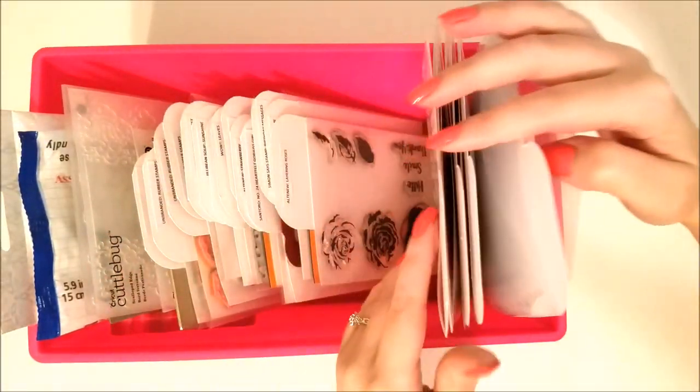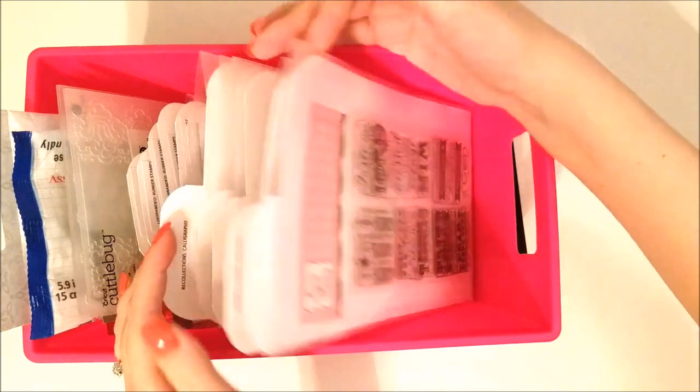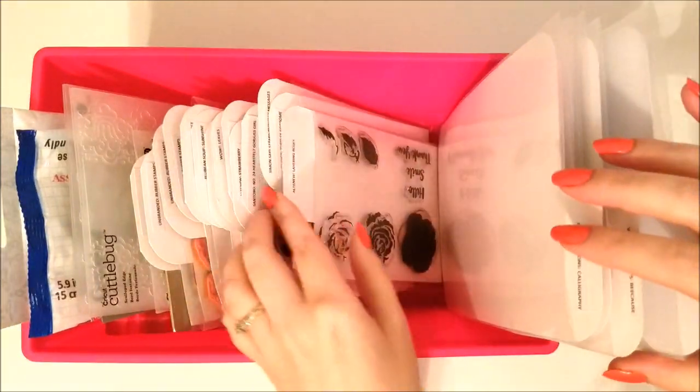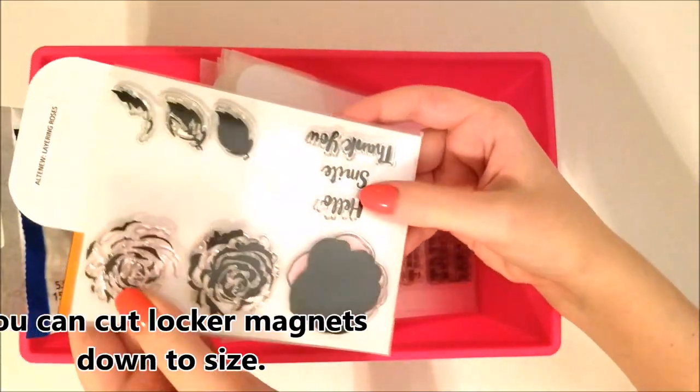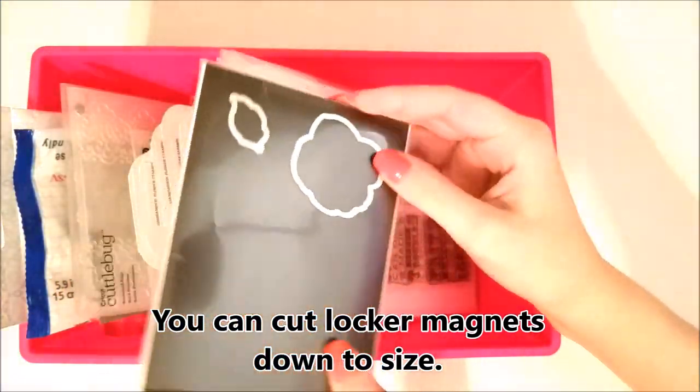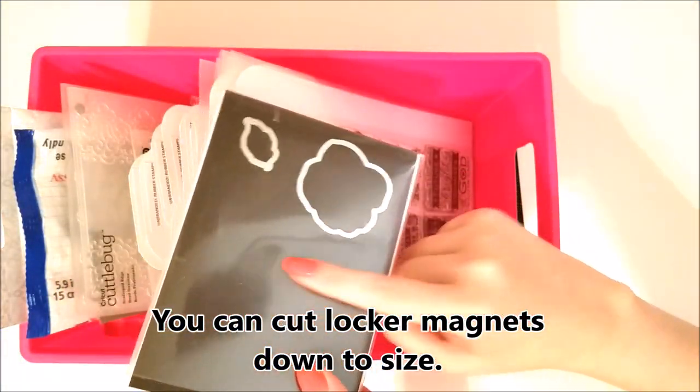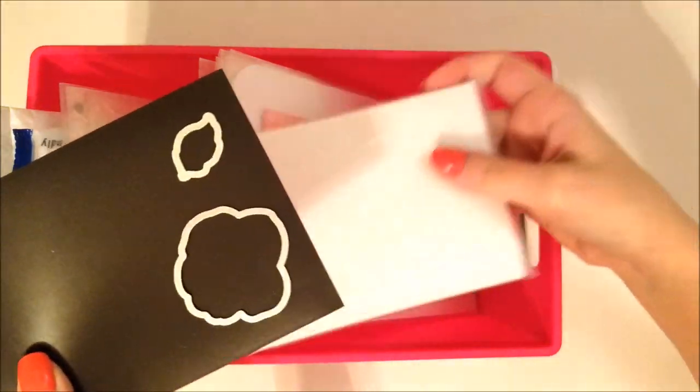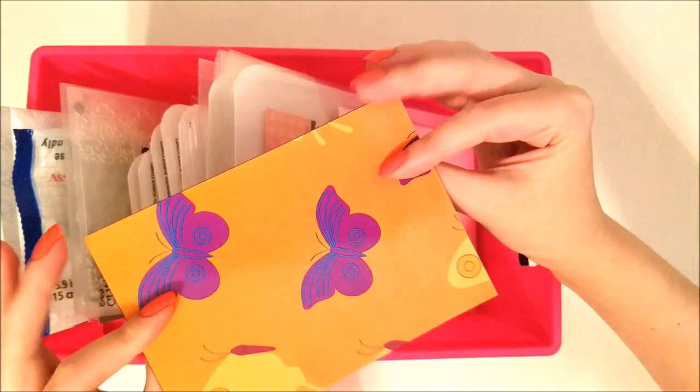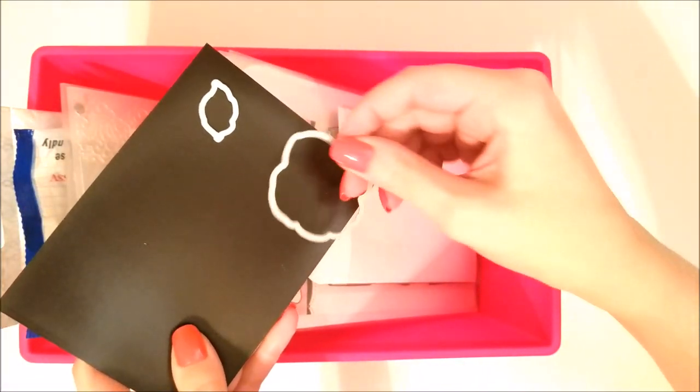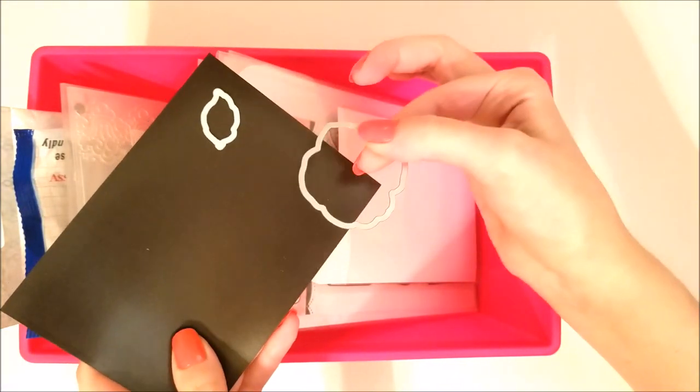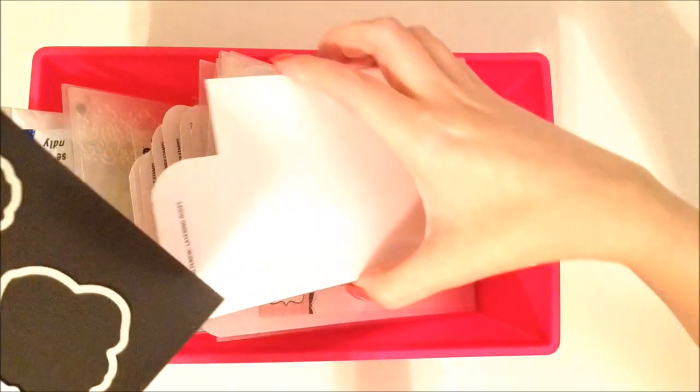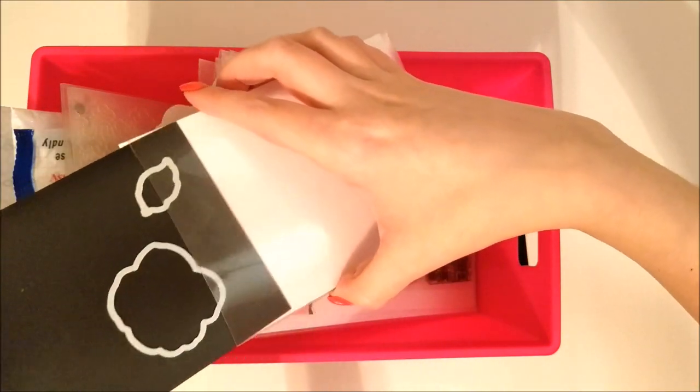These magnet sheets I have on the back to stick the dies, those are just like locker magnets. They're decorative panels for school kid lockers. You can get those at Dollar Tree, those are somewhat seasonal so your Dollar Tree may or may not have them. If not you can find them on eBay at a really reasonable price. I'll have all that linked for you over on my blog, just check the description for details.